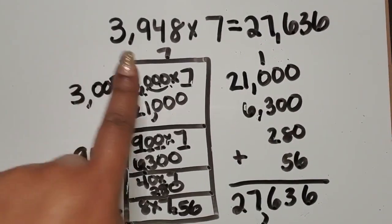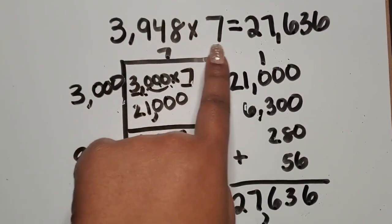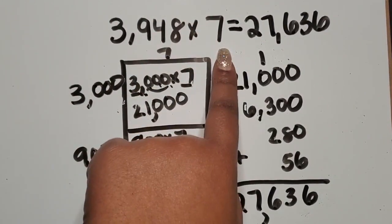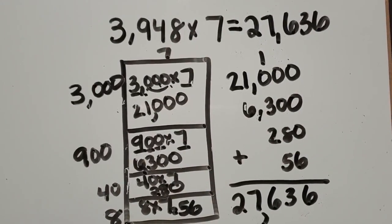We took a four-digit number and multiplied it by a one-digit number. We also had a one-digit number and multiplied it by a four-digit number — using the area model.